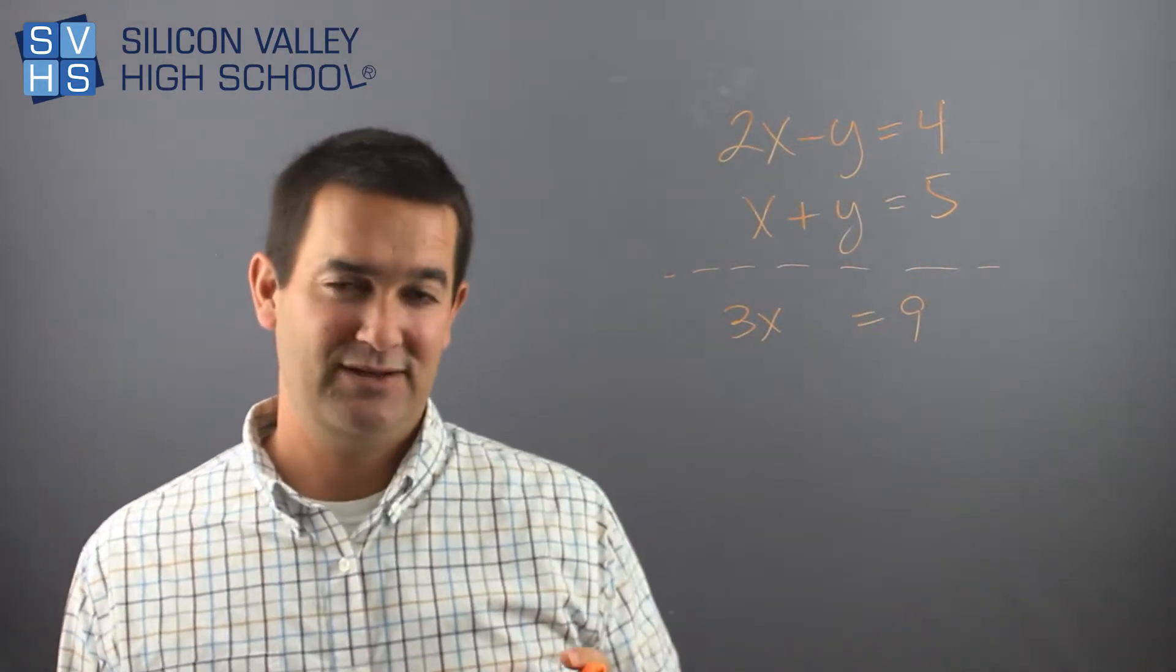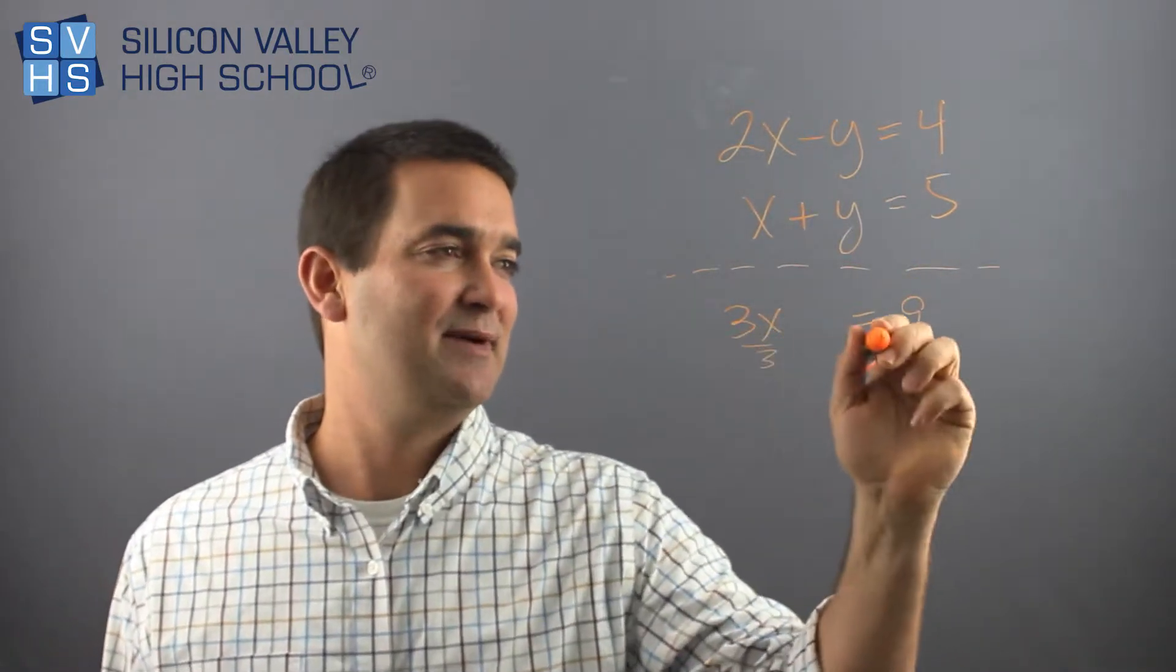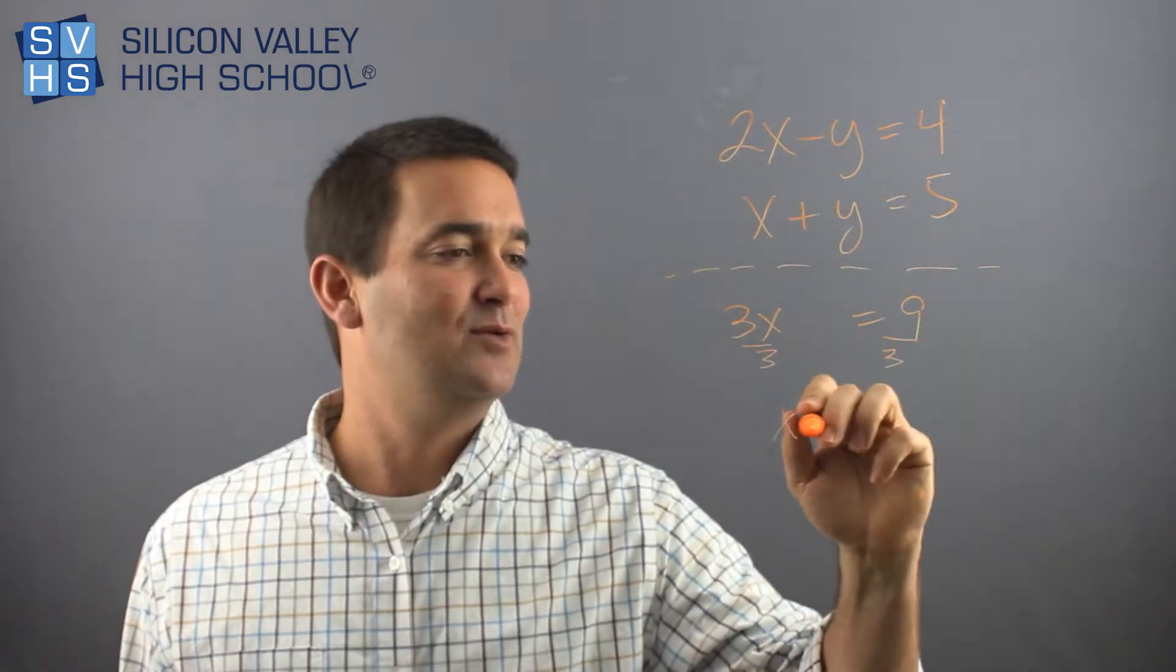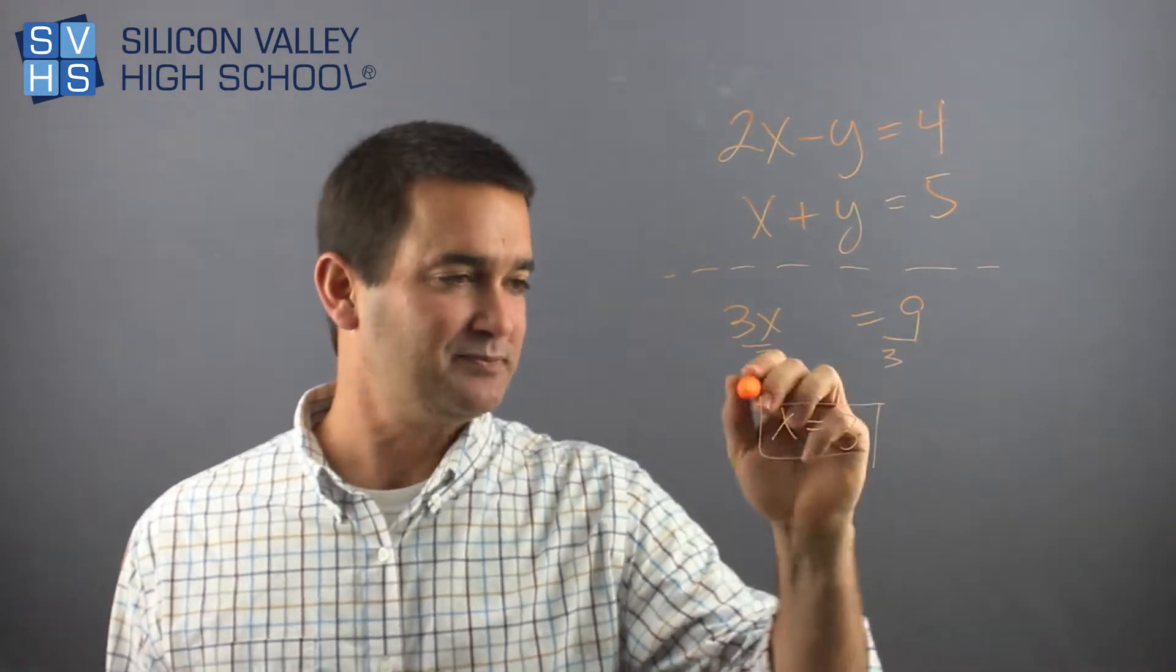That's perfect because now I'm down to one variable. If I divide both sides by 3, I get X equals 3. So that's pretty clean.